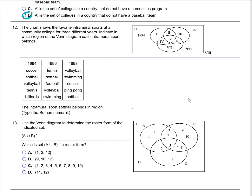Question 12: the chart shows the favorite intramural sports at a community college for three different years, indicating which region of the Venn diagram each sport belongs. We're going to look at the sport softball. I look at each year and I see softball appears in all three years. Therefore, when I look at my Venn diagram, I know it's going to go into region five.